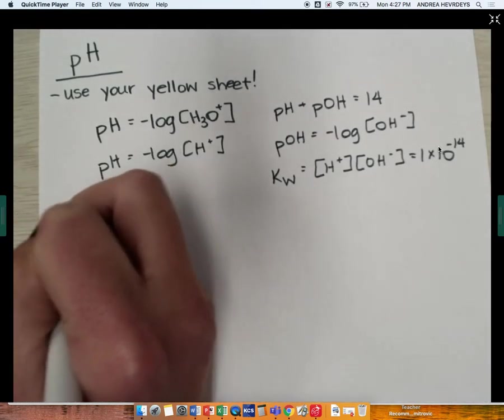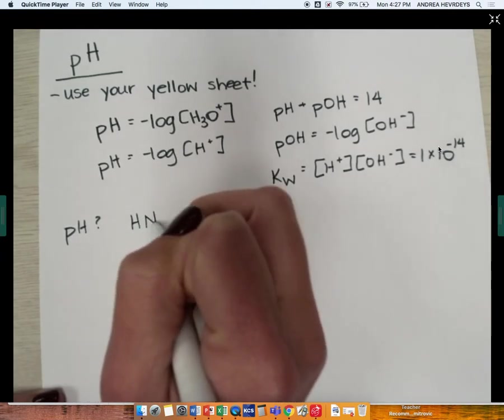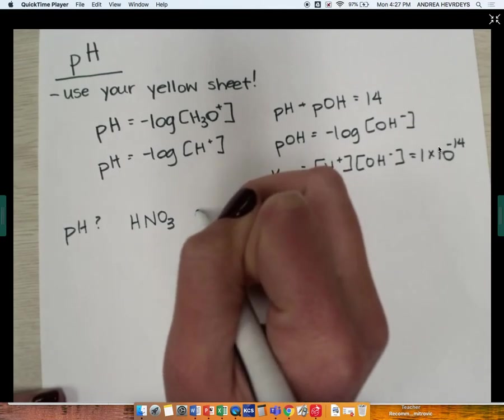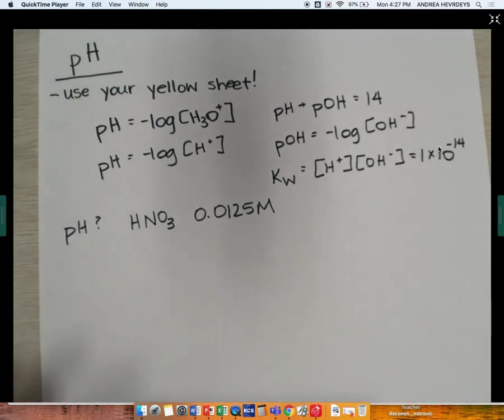Let's say, what is the pH of a solution that has, we'll make it nitric acid, that has a concentration of 0.0125 molar. So given the concentration of that acid, what is its pH?